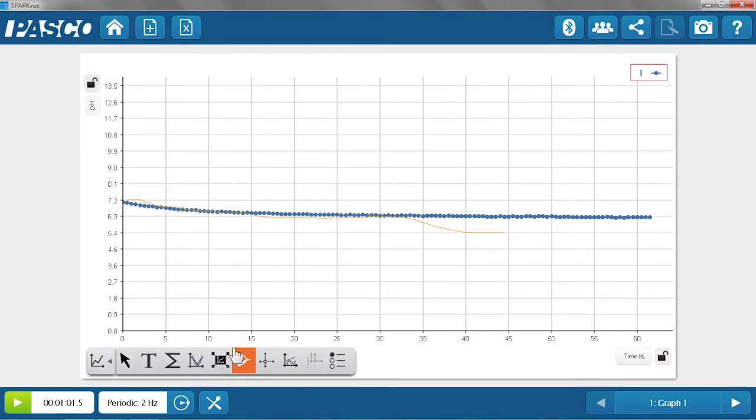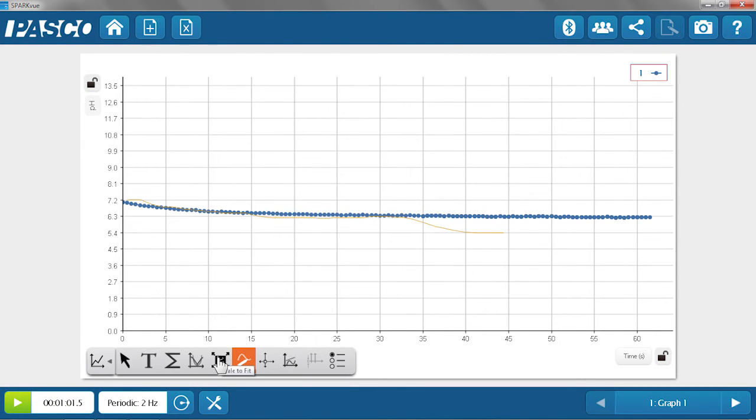All right, we'll go ahead and stop data collection, and we can rescale the graph to get a better view of our data. As you can see, the pH decreased as carbon dioxide dissolved in water and created carbonic acid, but not quite as dramatically as I had initially predicted.